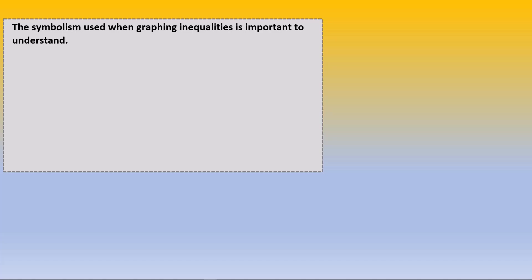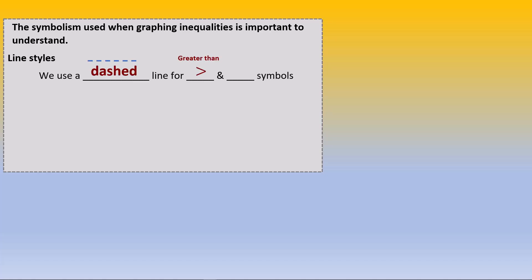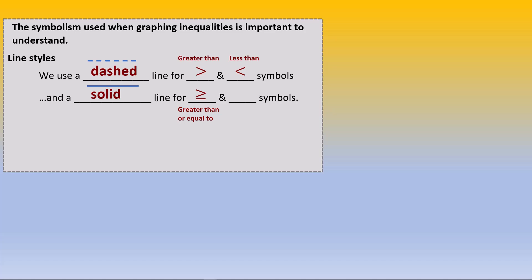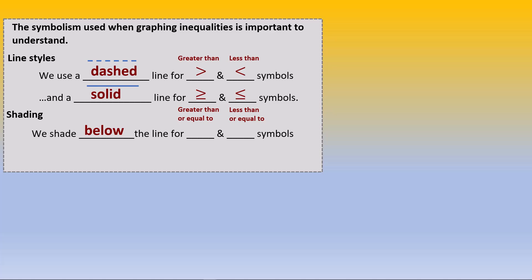The symbolism used when graphing inequalities is important to understand. For line styles, we use a dashed line for greater than and less than symbols, and a solid line for greater than or equal to and less than or equal to symbols. For shading, we shade below the line for less than and less than or equal to symbols, and above the line for greater than and greater than or equal to symbols.